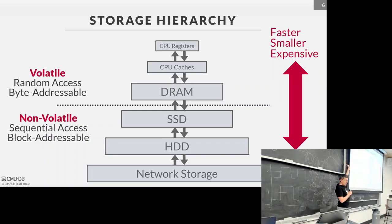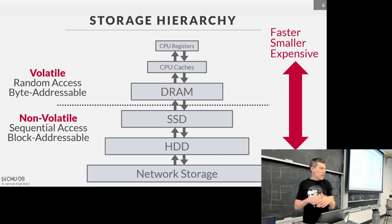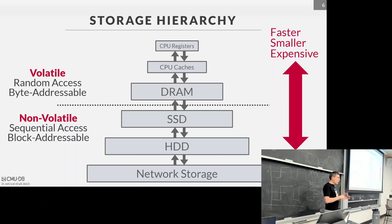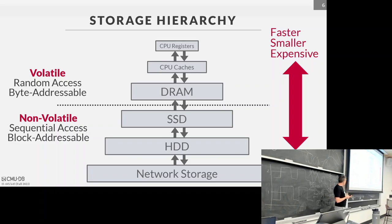From our perspective this semester, the key dividing line is between volatile and non-volatile storage. Volatile means data is gone when power is gone — DRAM and CPU registers get wiped when you pull the plug. Non-volatile means that if you make the correct calls and get back an acknowledgment, data is persistent across restarts and power loss. Database systems don't trust the hardware or the OS, so we do extra things like writing to multiple locations to ensure truly non-volatile storage.